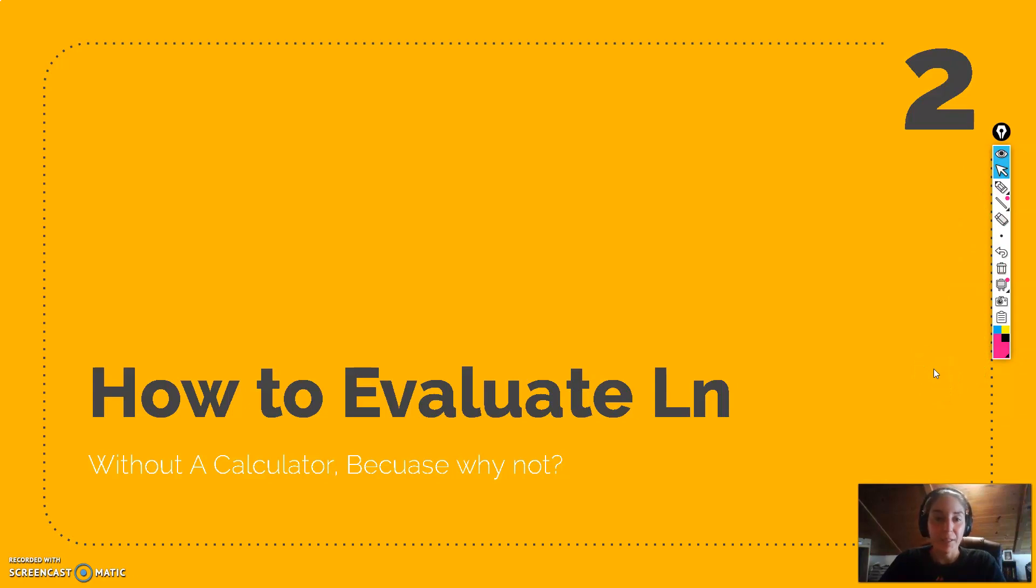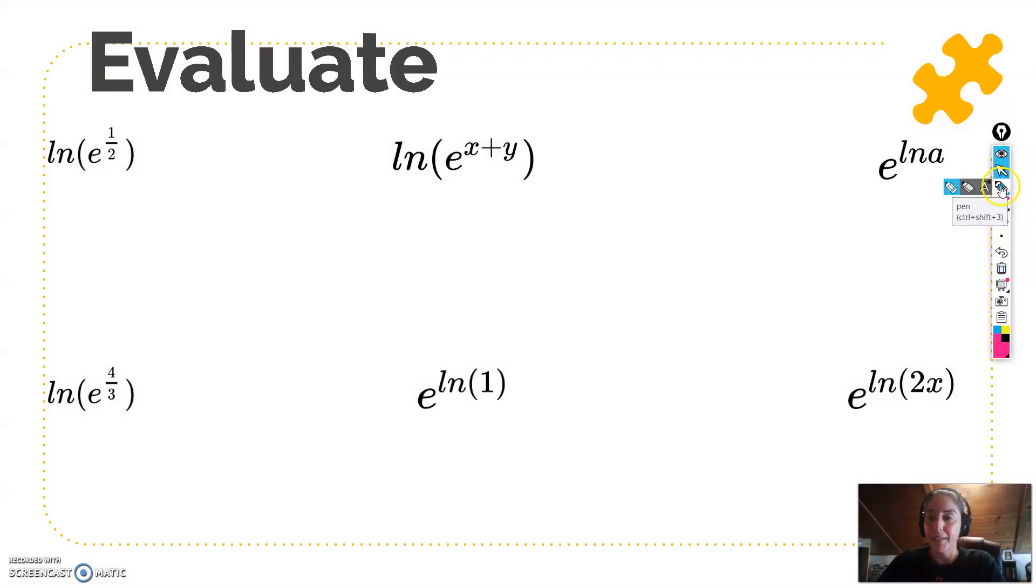So that was for log. Now let's see how to evaluate the ln, without a calculator. What if I have the ln of e to the 1 half? Well, any time you have a composition of inverse functions, they cancel out, and e and ln are inverses. So these cancel out, so I'll just be left with 1 half.